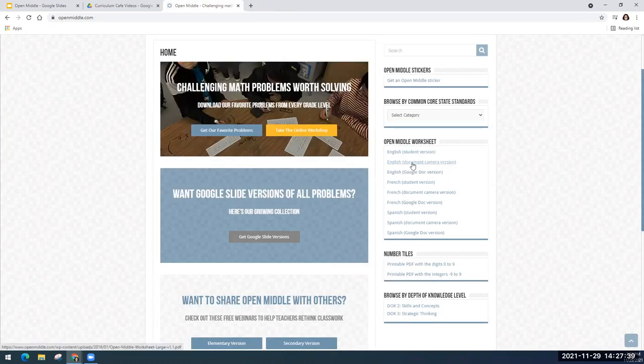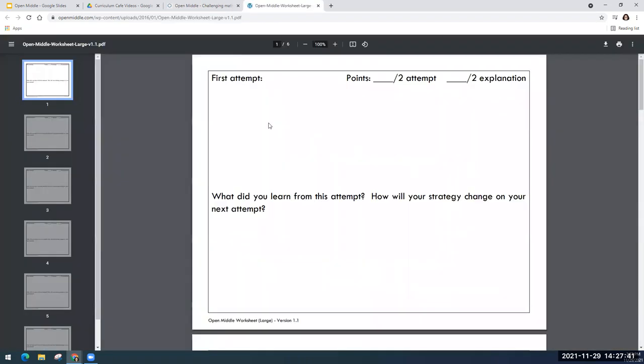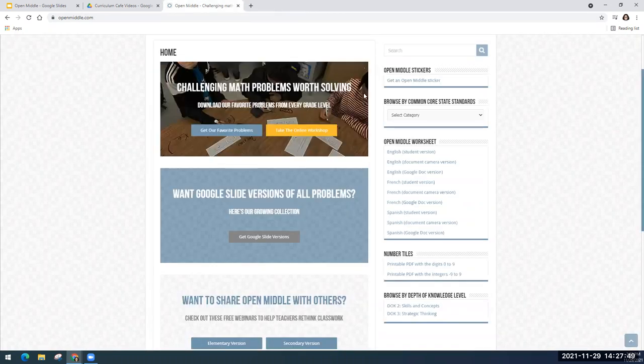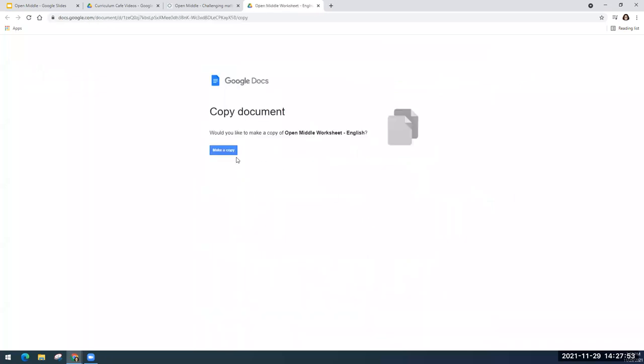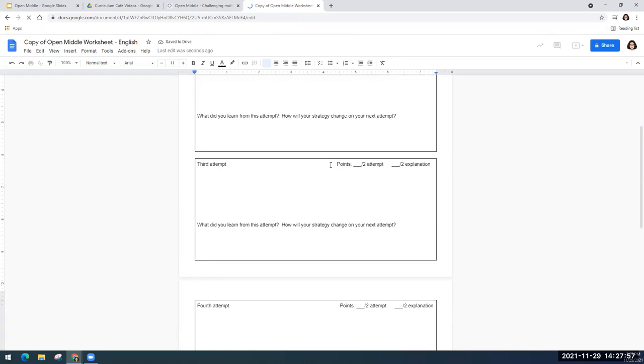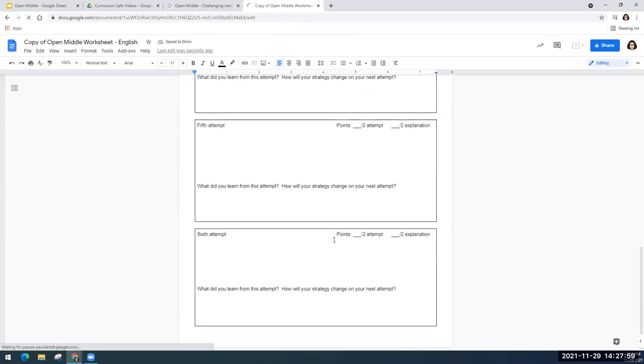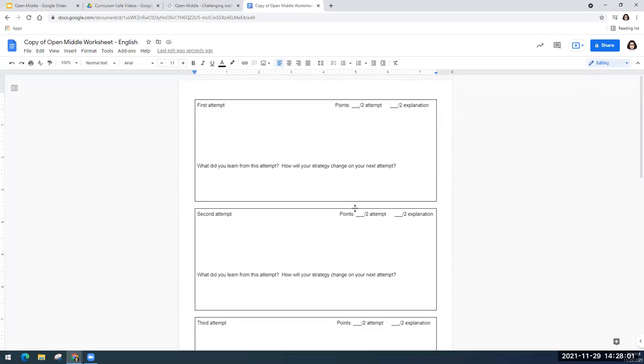Right underneath the student version, there's also a document camera version for the teachers. And so it's the exact same thing except on a full sheet of paper. So that if you are using it on your document camera, it just shows up a little bit larger. Then the last thing he has there is a Google Doc version. So when you click on it, it'll prompt you to make a copy. And if you go ahead and make a copy, you can see that it's the exact same worksheet, but on a Google Docs. And so you can share this with your students via Google Classroom if that's something that you're doing.